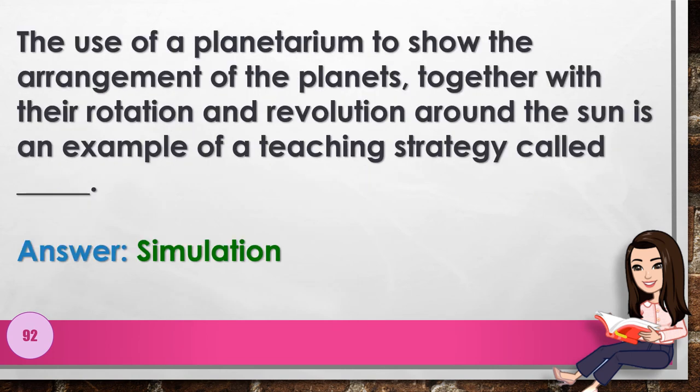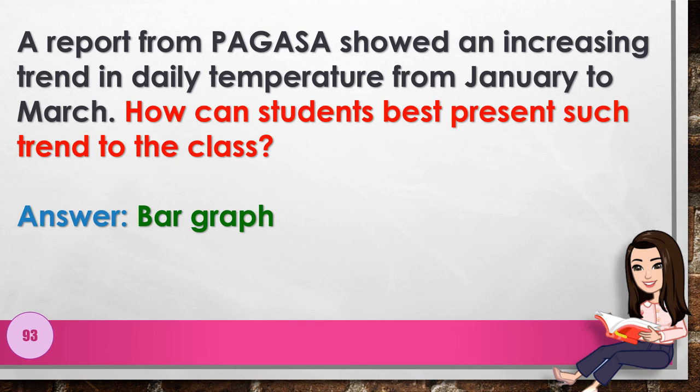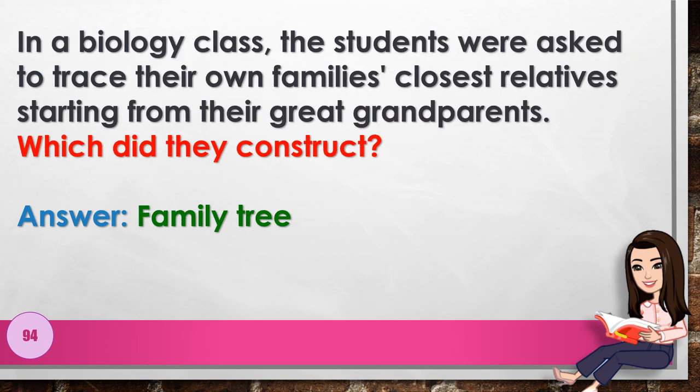Number 92: The use of a planetarium to show the arrangement of the planets together with their rotation and revolution around the sun is an example of a teaching strategy called blank. Answer: simulation. Number 93: A report from PAGASA showed an increasing trend in daily temperature from January to March. How can students best present such a trend to the class? Answer: bar graph.